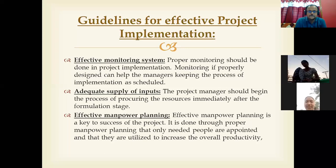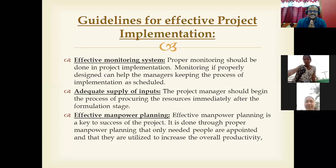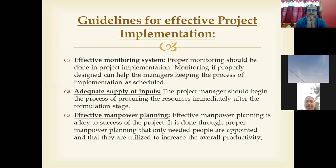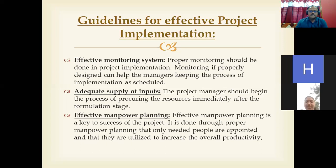There should be adequate supply of inputs. Before the company starts the project, it must ensure that all inputs necessary to implement the project are sufficient. For example, in the construction of a building within six to eight months, inputs would include labor and materials — these should be intact. Then manpower should be very effective; you should plan the manpower, meaning the number of people required to implement that particular project.